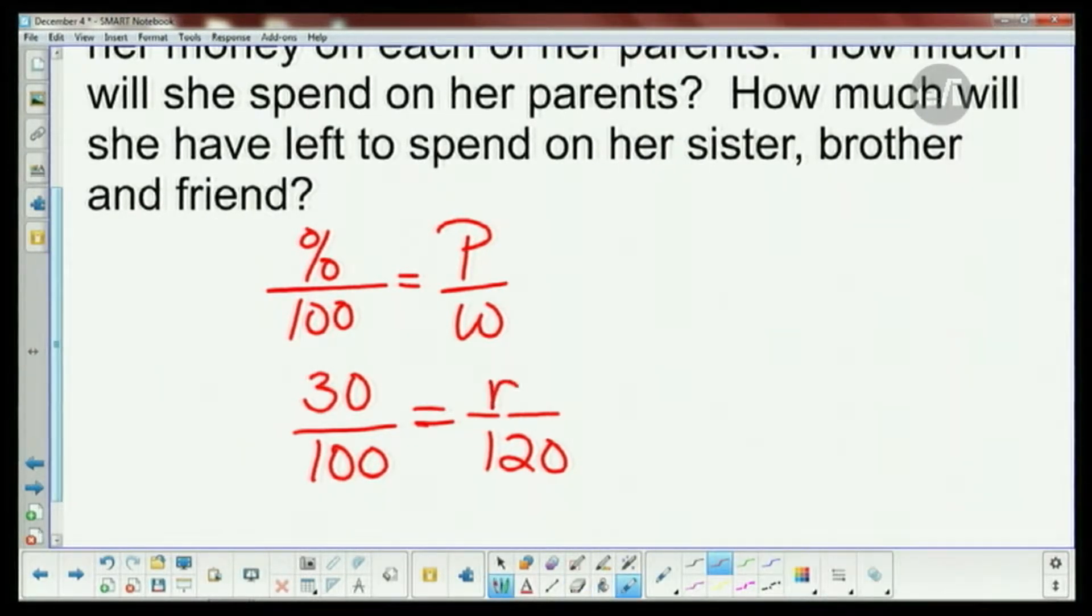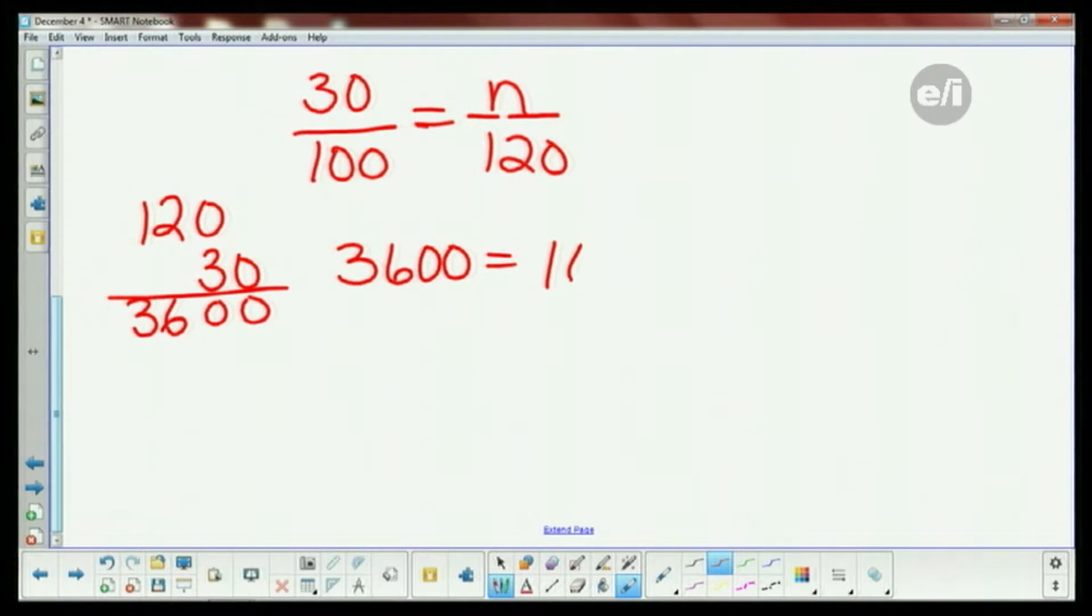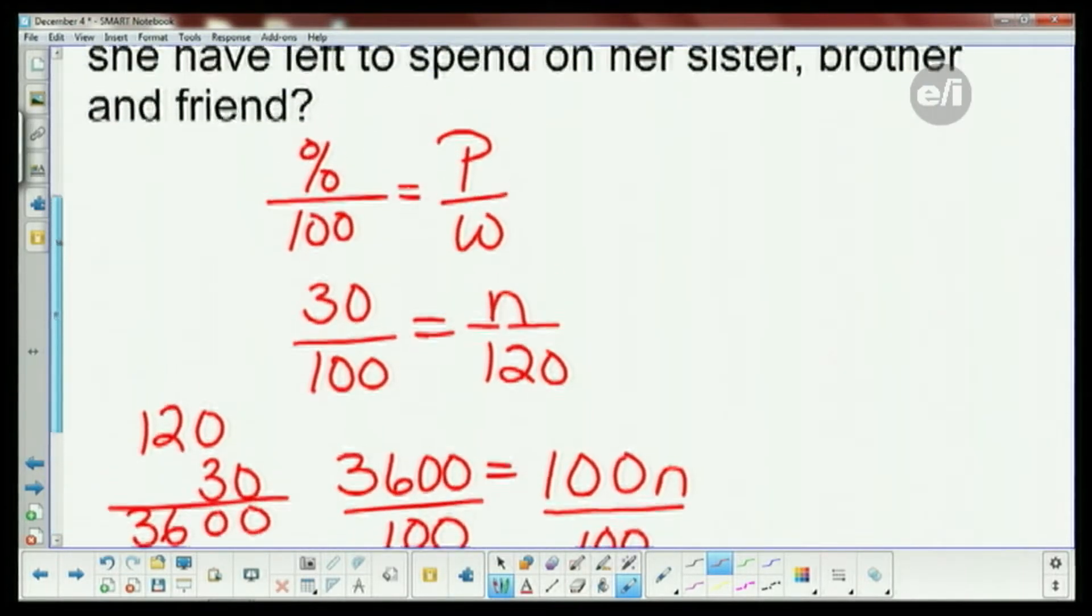Let's not use P again since I used P for percent—don't want to mess everyone up. We'll use n for the money. Now you're gonna cross multiply, so you do 120 times 30—3600—is equal to 100n. Divide by your hundred, and your n is $36.